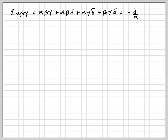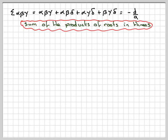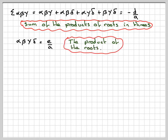There they all are. The sum of the product of roots in threes equals minus d over a. And then in the final case, the product of all four roots alpha·beta·gamma·delta equals e over a. It's quite long-winded, but that's how it works. I hope you've understood, and thank you very much for watching.